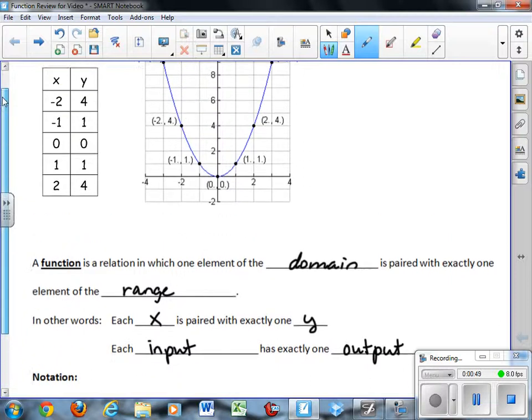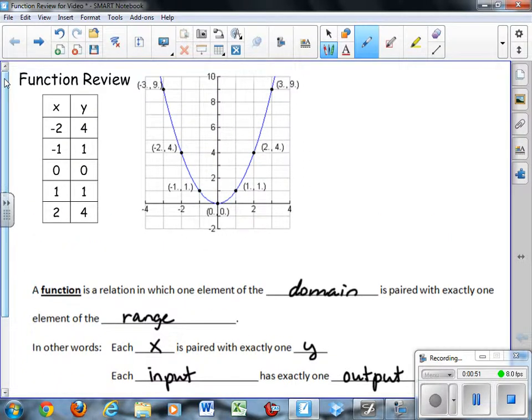So let's look at this function up here. If you look at the table of values, negative 2 is the x value. It's paired with exactly one y value, because we don't see negative 2 being paired with anything else but 4. Negative 1 is paired with only 1. And so from this table of values, it looks like each x is paired with exactly one y.